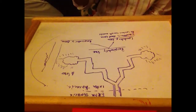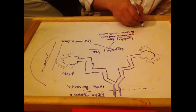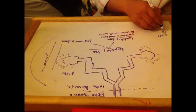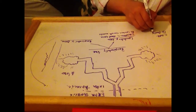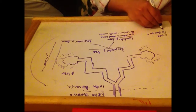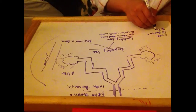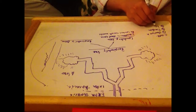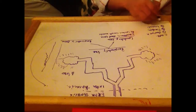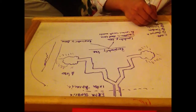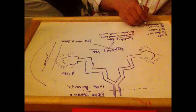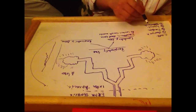The conductance zone consists of the nose, the pharynx, the trachea, the bronchi, the bronchioles, and the terminal bronchioles.